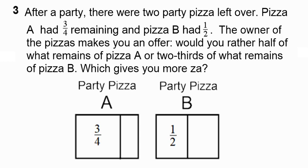Question 3. After a party, there were two party pizzas left over. Pizza A had three quarters remaining, and Pizza B had half of it remaining. The owner of the pizzas makes you an offer: would you rather have half of what remains of Pizza A, or two-thirds of what remains of Pizza B?